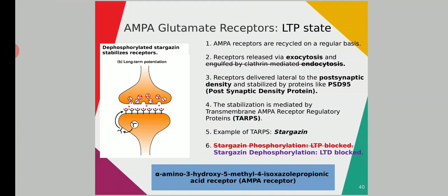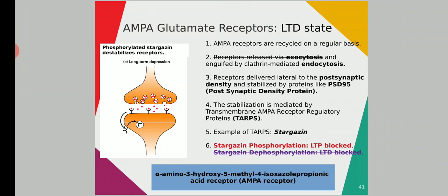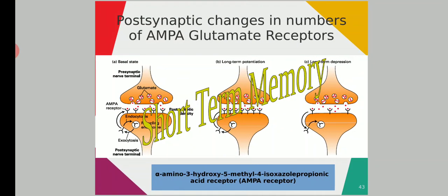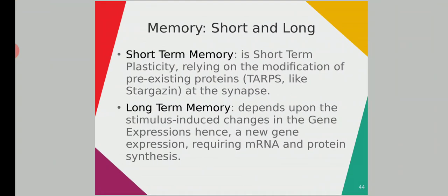Stargazin dephosphorylation is behind the mechanism of short-term memory. Short-term memory is short-term plasticity. It relies on modification of pre-existing proteins like stargazin at the synapse — phosphorylation or dephosphorylation of stargazin.